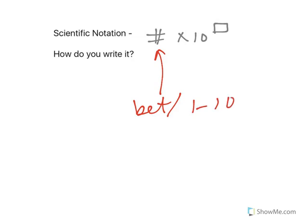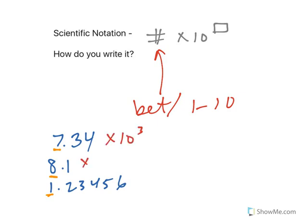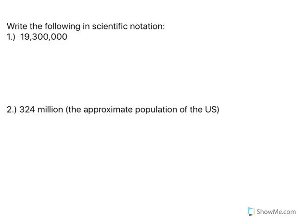We're dealing with powers of 10, but there is a very special piece about this first number. It has to be between 1 and 10. So when you think about decimals, you could have like 7.34 or 8.1 or 1.23456. The big thing is that there's only one number in front of the decimal point when you are writing numbers in scientific notation.